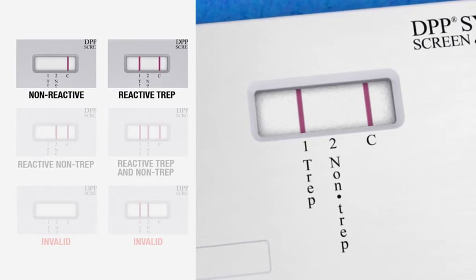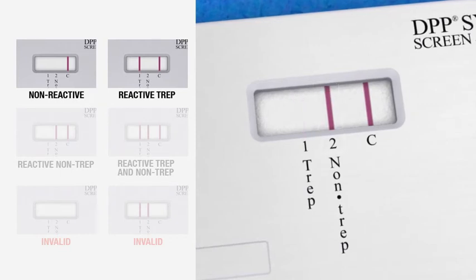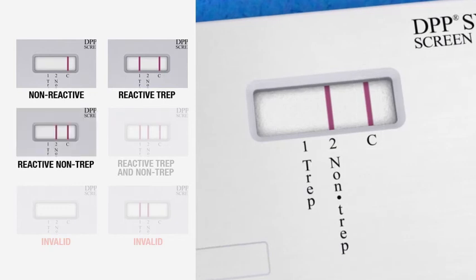If a reddish test line is visible above marking 2 NON-TREP in the test window and a reddish control line has formed above the C marking, then the result is reactive for non-treponemal antibodies only.